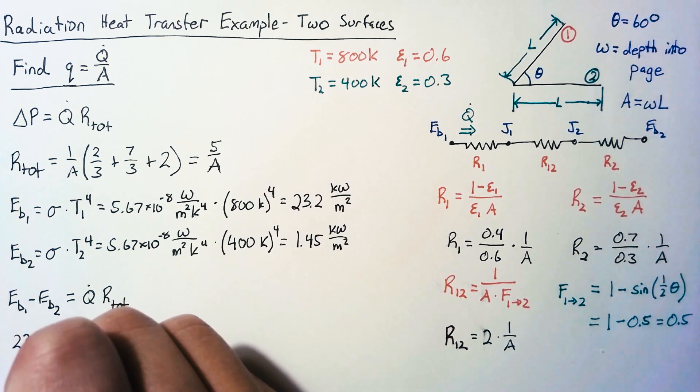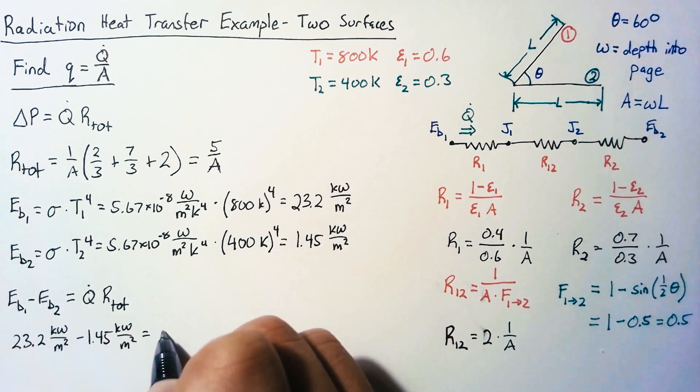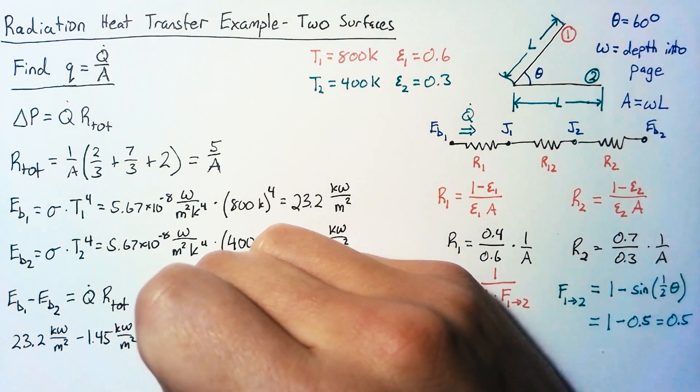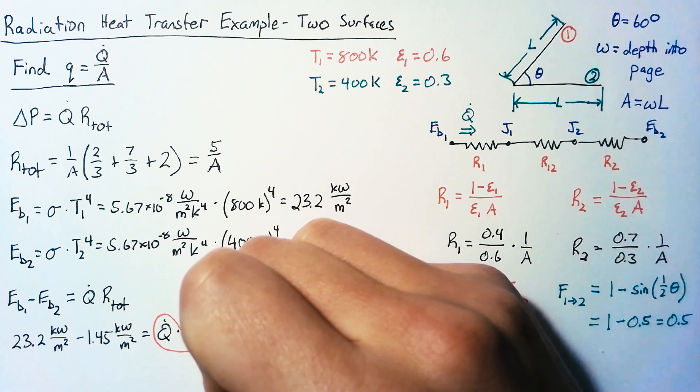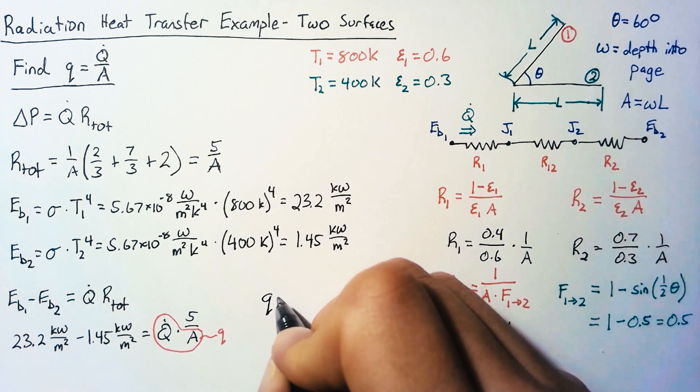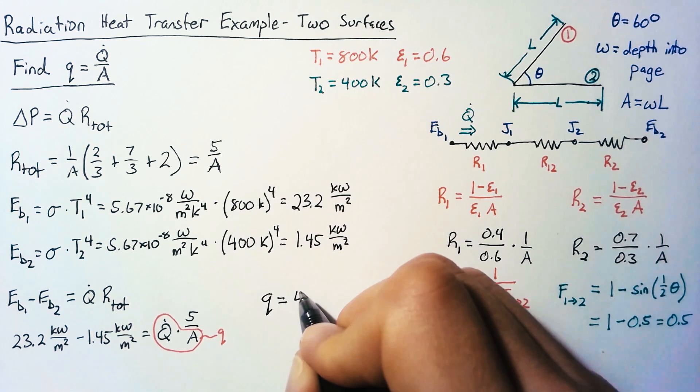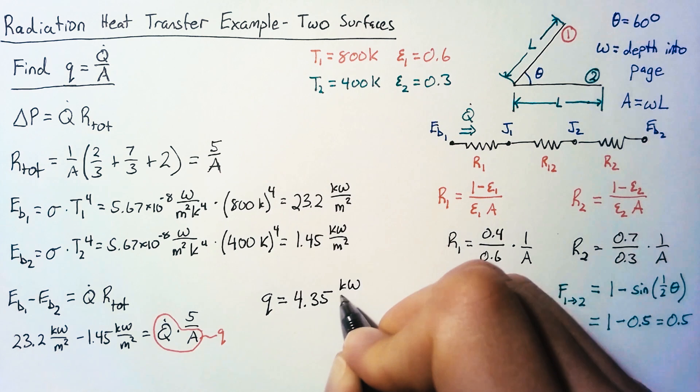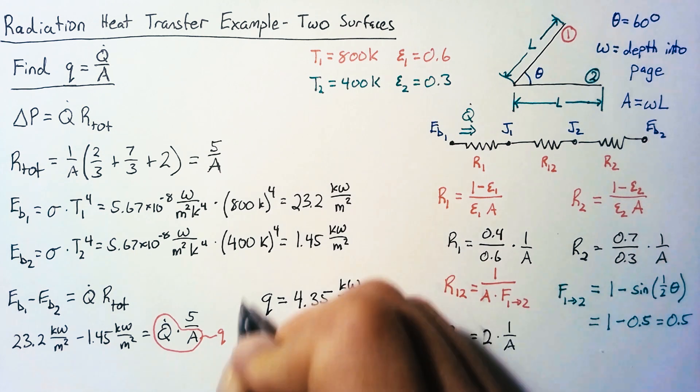So plugging things in, we can see that our heat flux just naturally falls out here. So that's the Q that we're looking for. And so we have this number on the left is going to be equal to five times Q. So all that's left is to plug and chug. And we end up with Q is equal to 4.35 kilowatts per meter squared.